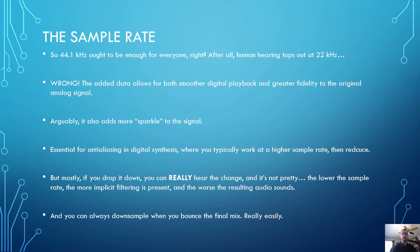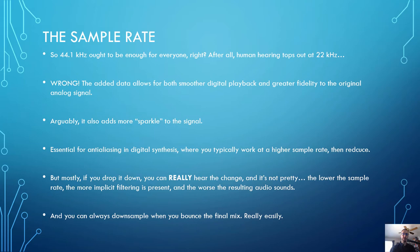Having more samples per second means smoother digital playback and greater fidelity to the original analog signal. Arguably, adding more higher-end frequency content gives more sparkle or air in the signal. More importantly, this is essential for anti-aliasing in digital synthesis, where you're typically working at a higher sample rate within the oscillator or synthesizer plug-in, then down-sampling before sending output to your DAW. And if you drop the sample rate below 44.1K, you will hear the change — the lower the sample rate, the more implicit filtering of higher frequencies is present, and the worse the resulting audio will sound.